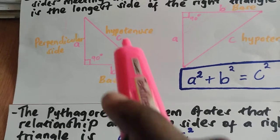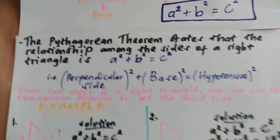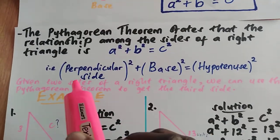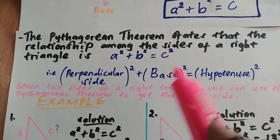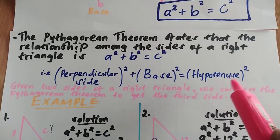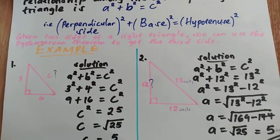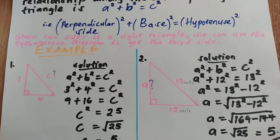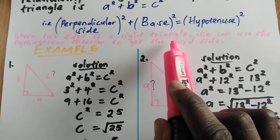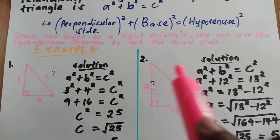In essence, the square of the perpendicular side plus the square of the base equals the square of the hypotenuse. This is the Pythagorean theorem. Given two sides of a right triangle, we can use the Pythagorean theorem to find the third side.